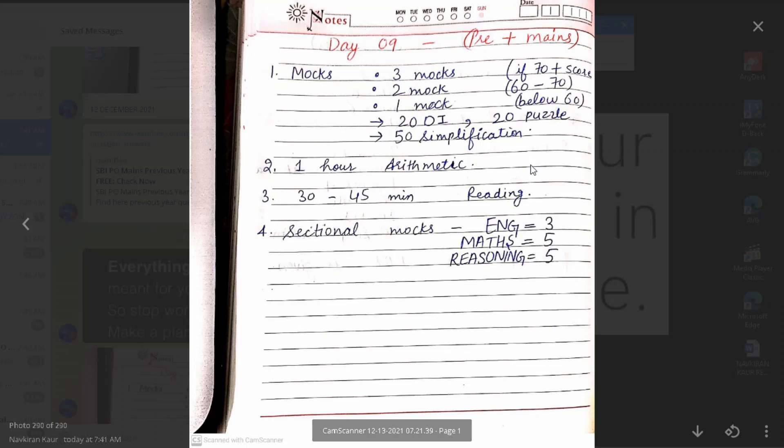So what is the target of pre plus mains? We will do it with something unique, something different. So first of all you have to give sectional mocks or mini mocks. And I will tell you sources also. So you have to give 3 English sectional mocks or mini mocks, and 5 Maths and Reasoning.